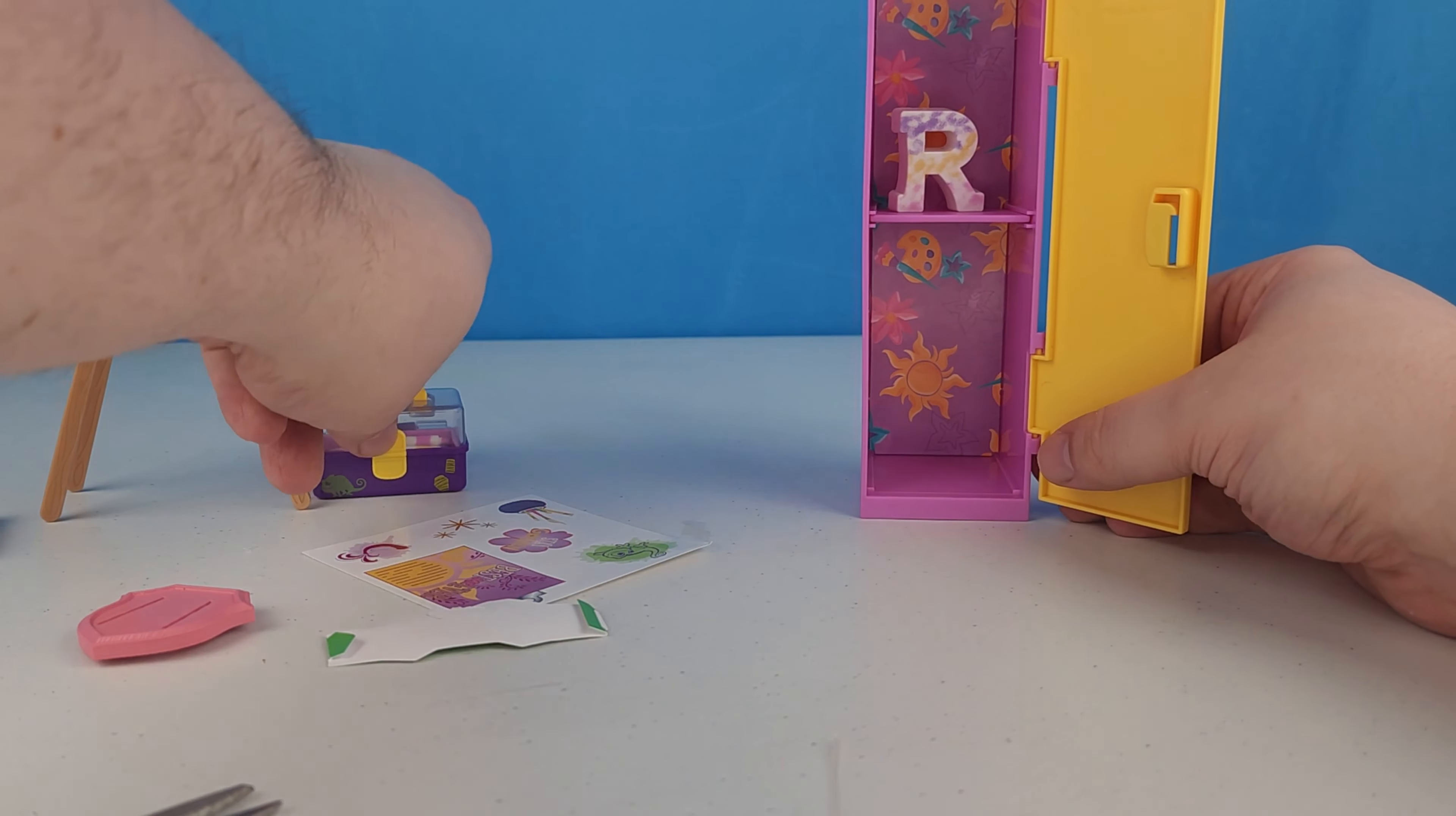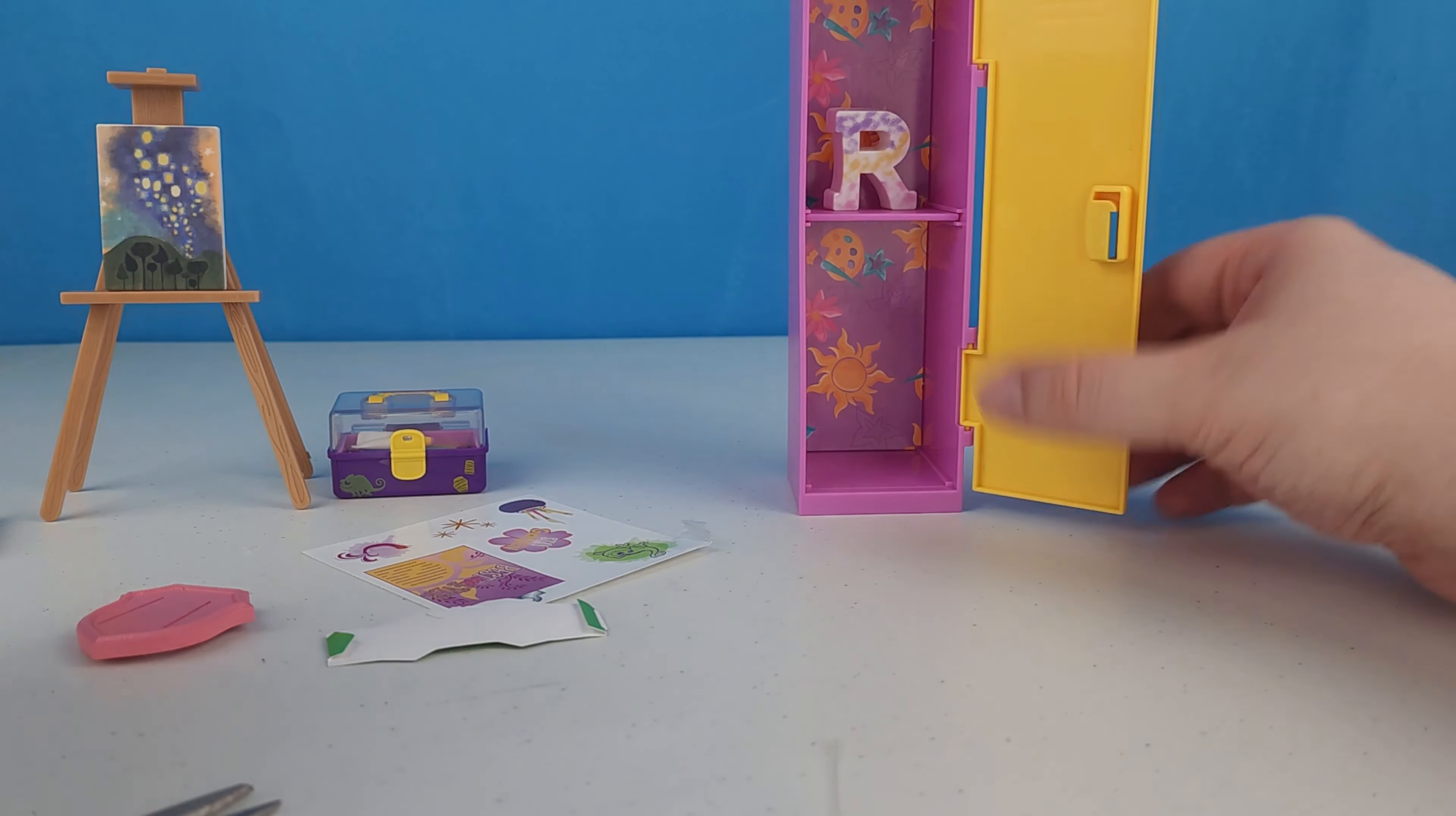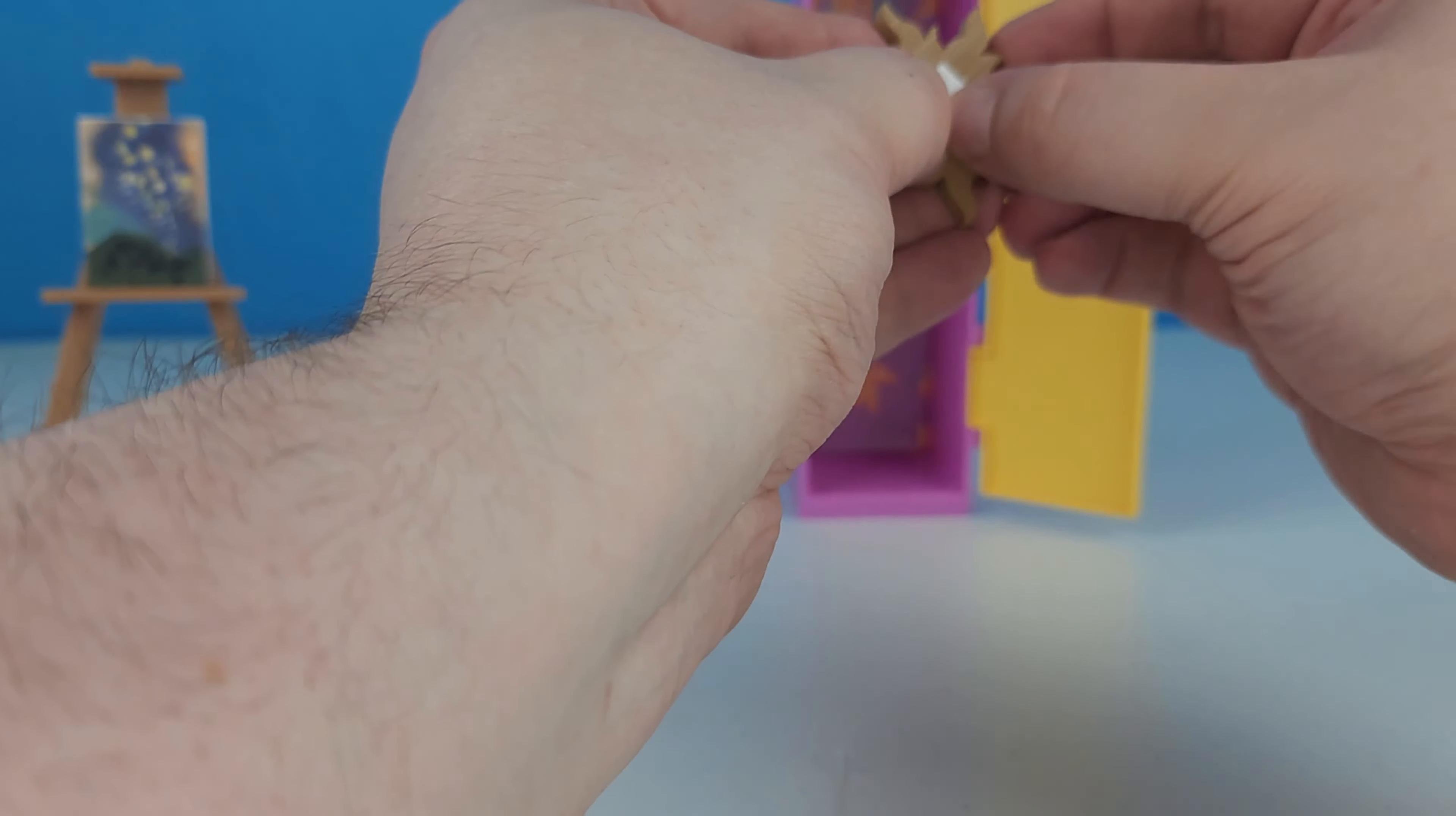Looks like this is a little big for the locker so it'll probably sit, well it doesn't even sit like flushed out in there, but she's got a little R she can put in her locker. And we got this mirror and it's got Pascal on it, looks like it's made out of wood, so cute. So it's got sticky stuff on the back of it.